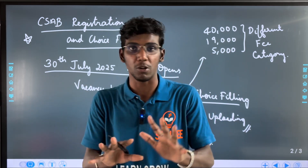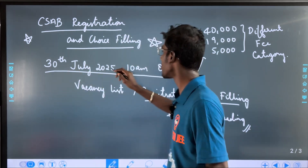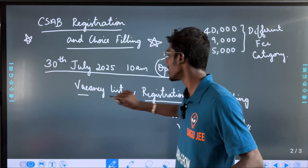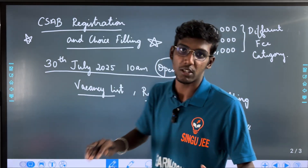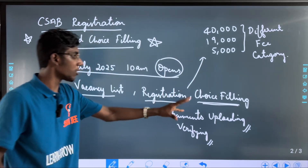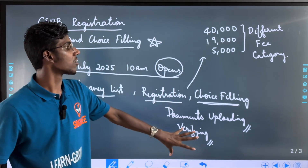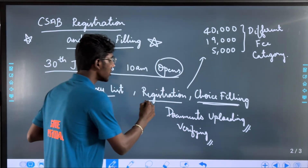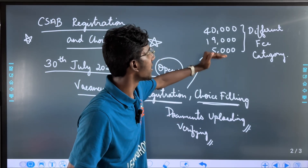Just like this, it says that 30th July, the 25th, the 10th month, it will open. Vacancy list and registration choice filling will not open yet. That means the registration of documents is uploaded. Anyone can verify it — there is verification on that. The main thing is the registration of different types of fee categories.